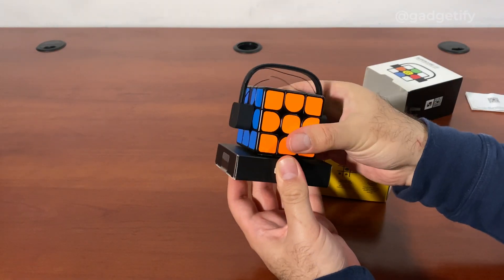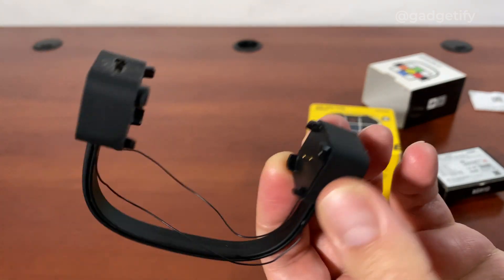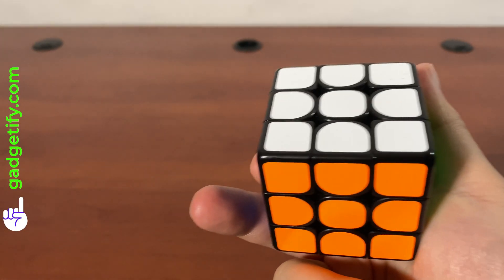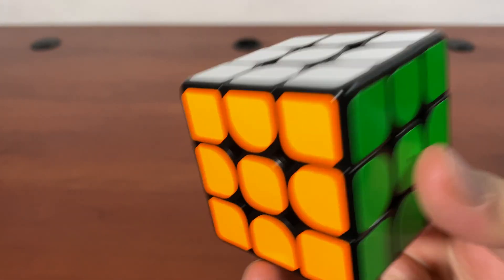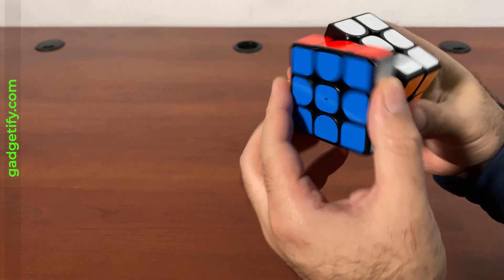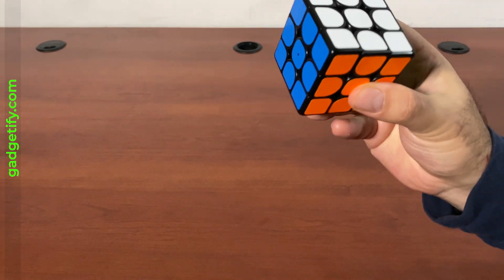This is everything that you get here. You get your charger. This is the Supercube i3s. It has smart positioning tracking. So when I move this, it will know in the app. I'll show you how to solve these types of puzzles.